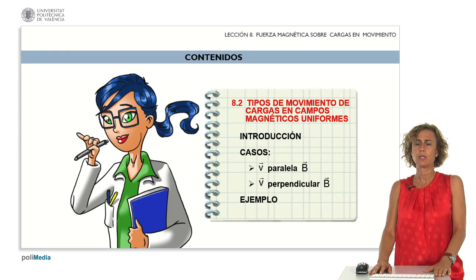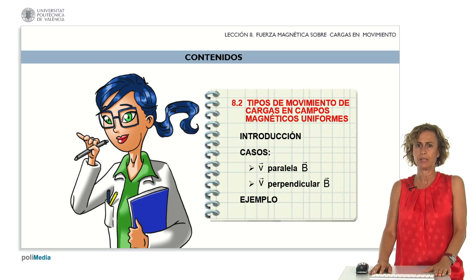We'll begin by providing a short introduction. Following that, we'll explore scenarios where the charge velocity aligns either parallel or perpendicular to the direction of the magnetic field. Finally, we'll see an example to solidify our understanding.